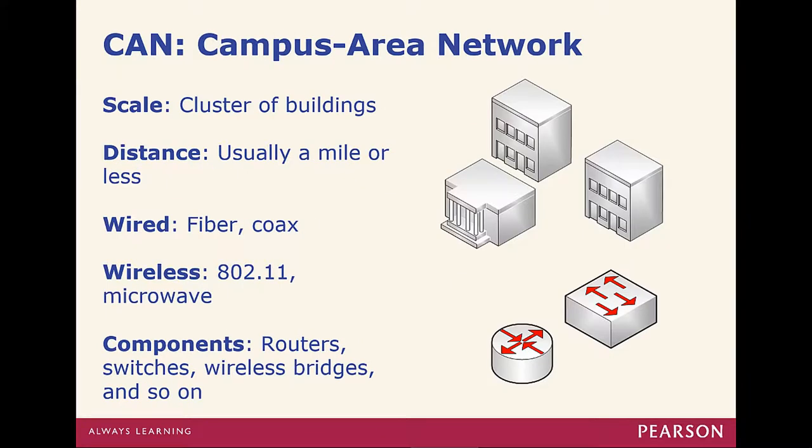Campus area network, multiple buildings. Normally for a campus. We could be talking about normally fiber. Coaxial, maybe. Ethernet, though. CAT5, CAT6. Wireless could be the 802.11. Or maybe even microwave. Components. This is going to be to connect the campus. Not the end users, but connecting the buildings. This could be routers and switches and wireless access points and maybe even wireless bridges.